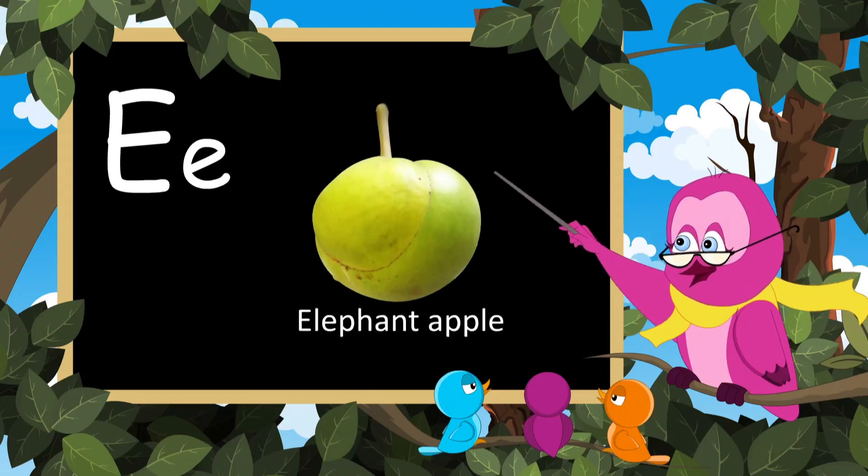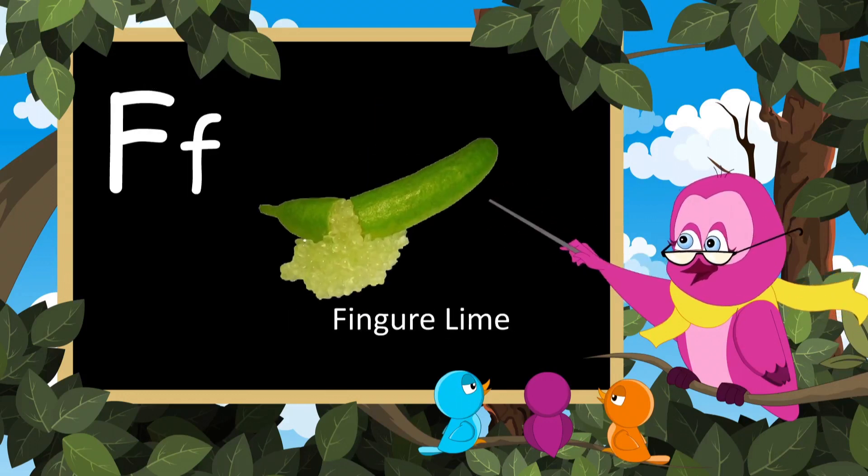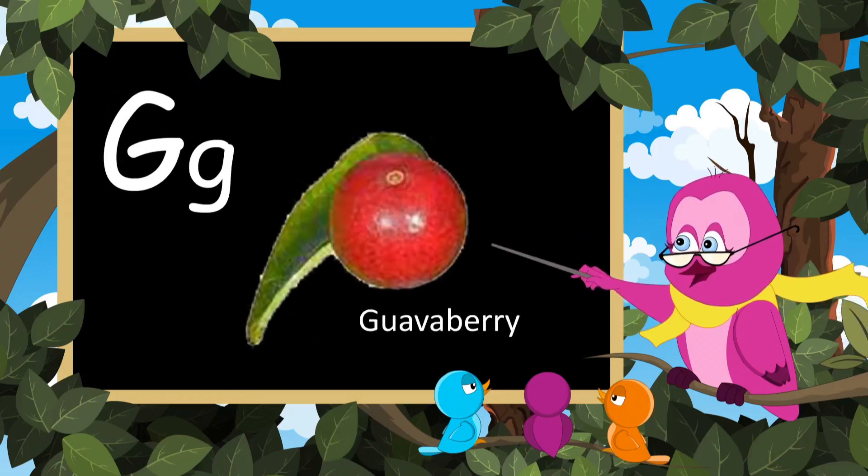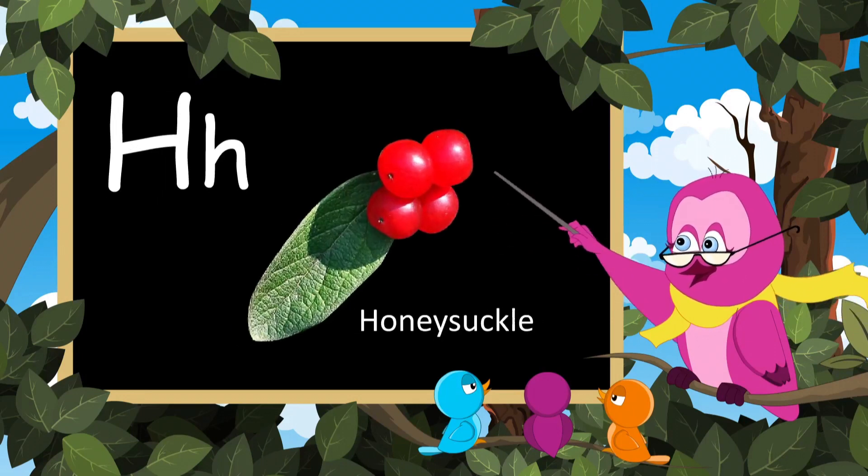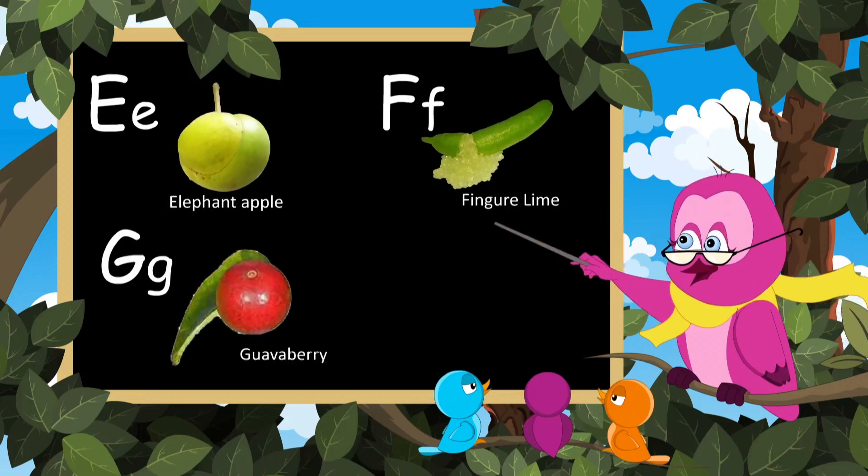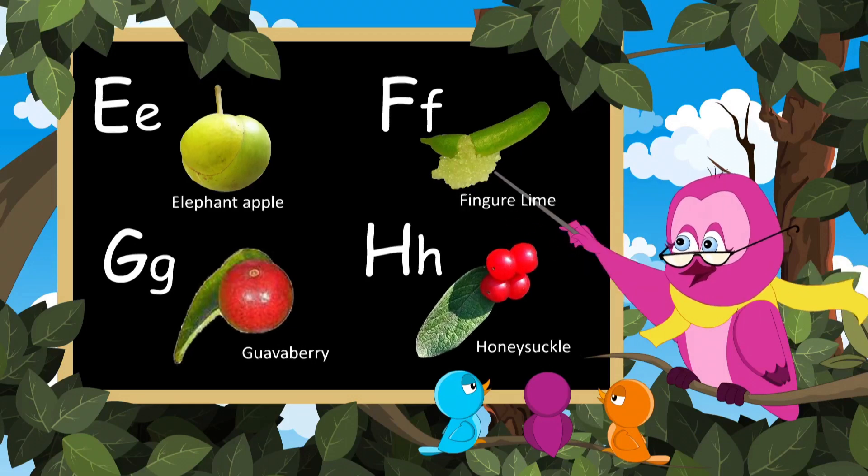E for elephant apple, F for finger lime, G for guava berry, H for honeysuckle. These are all for fruits, sing with me.